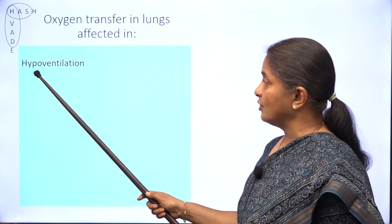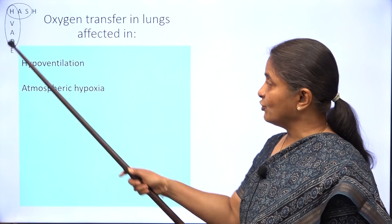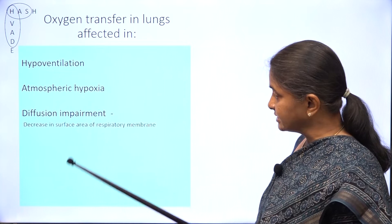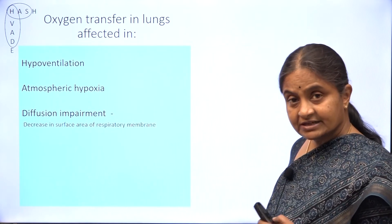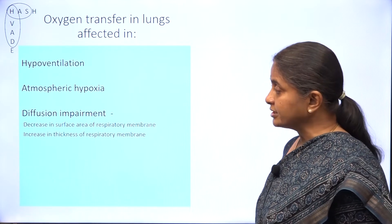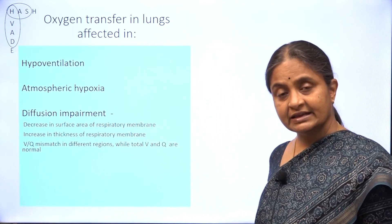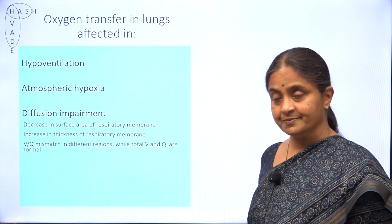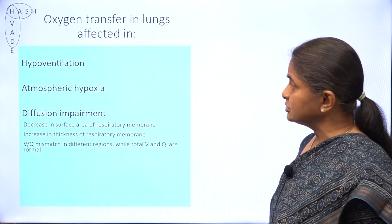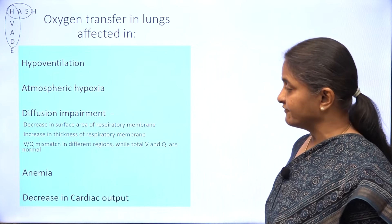V stands for ventilation impairment or hypoventilation, A for atmospheric hypoxia, D for diffusion impairment. Diffusion impairment occurs when there is a decrease in surface area of the respiratory membrane, increase in thickness, or a condition called VQ mismatch, which we shall see in greater detail in a later lecture. In addition to these conditions, oxygen transfer is also affected in anemia and cardiac failure.